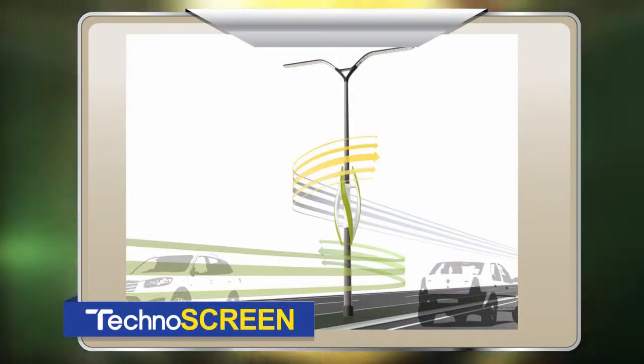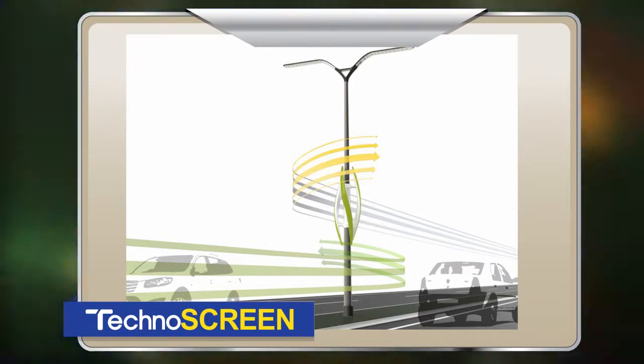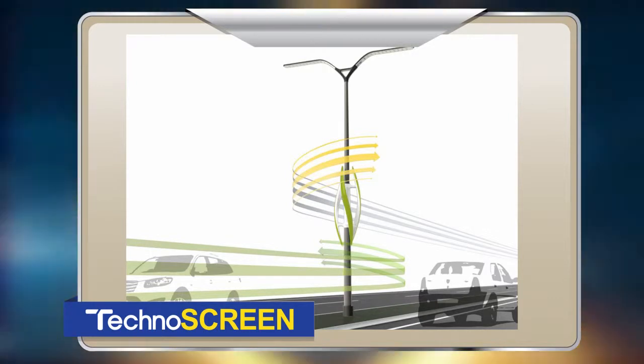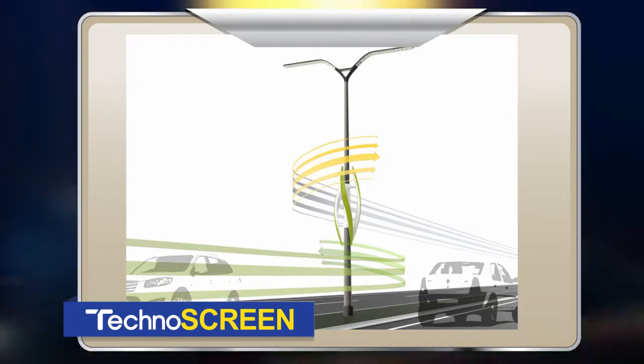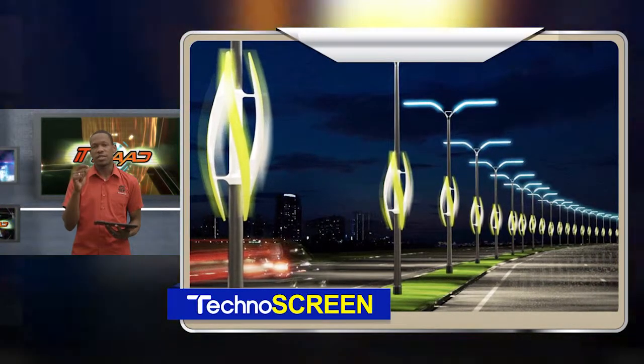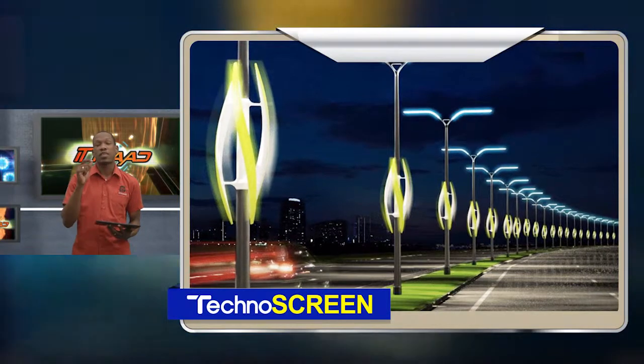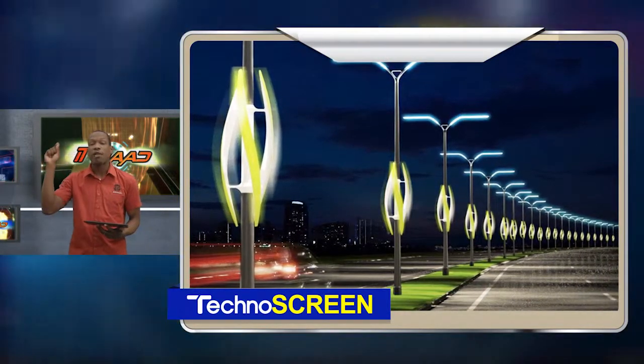The idea is to integrate one of these vertical rotating turbines into the light poles themselves. Every time a vehicle drives past, it generates wind. The wind then drives that turbine. The turbine generates electricity. That electricity can be used to power the streetlights, and more than likely it will generate enough electricity to not just power the lights but to be able to sell back to the grid.